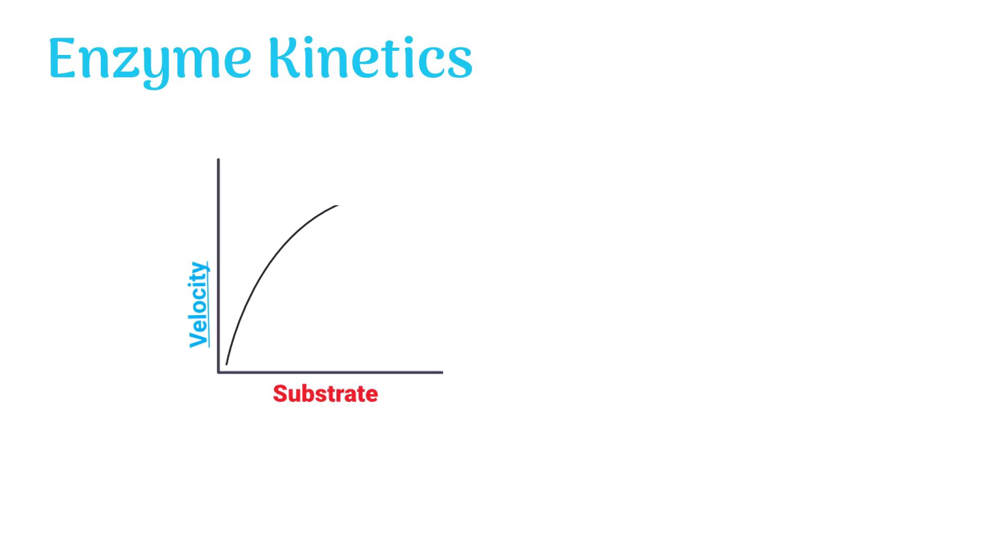Remember, this happens only at the initial stages of the reaction. After some time, if we keep increasing the amount of substrate, the speed of reaction remains the same. It does not increase. This stage is called the maximum velocity or Vmax.